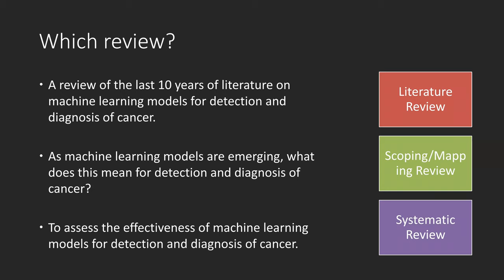Let's look at some examples. A review of the last 10 years of literature on machine learning models for detection and diagnosis of cancer should be a scoping and mapping review. The second one — as machine learning models are emerging, what does this mean for detection and diagnosis of cancer? When we compare this example with the previous, it's more broad, so it could be a literature review. The third example — to assess the effectiveness of machine learning models for detection and diagnosis of cancer — is more likely to be a systematic review.